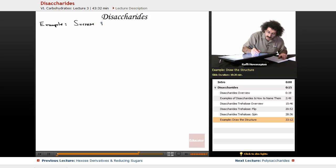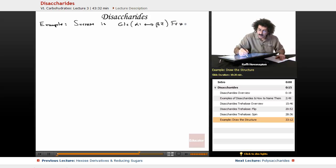Okay, sucrose, which is table sugar, is GLC-alpha-1-beta-2-FRU. So sucrose is a disaccharide, and it is made up of a glucose unit and a fructose monomer.